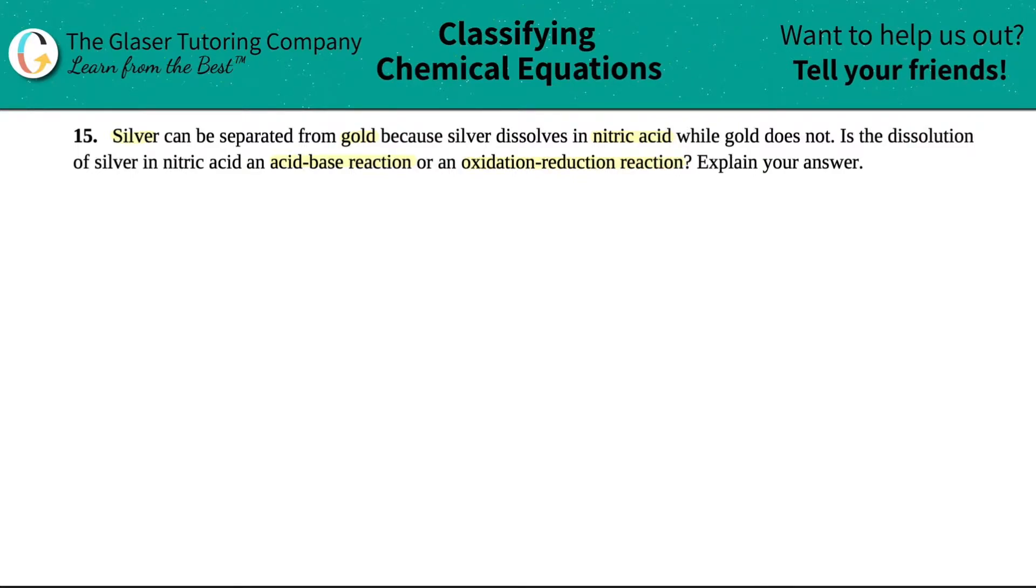Okay. So we have this idea here that silver is going to dissolve in nitric acid. So that seems like a reaction to me. Silver is dissolving in nitric acid and something is probably going to happen. So let's see what's going to happen. And from that, we can determine if it's an acid-base reaction or an oxidation reaction.